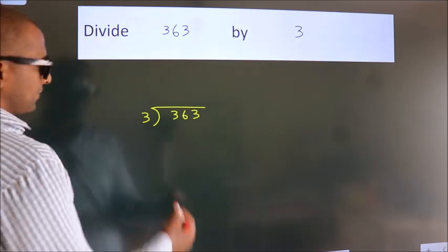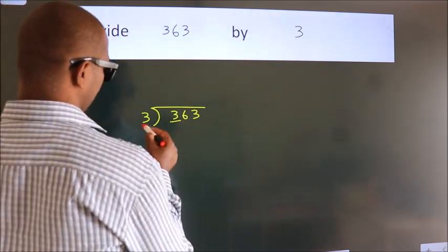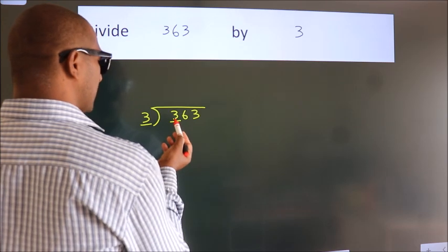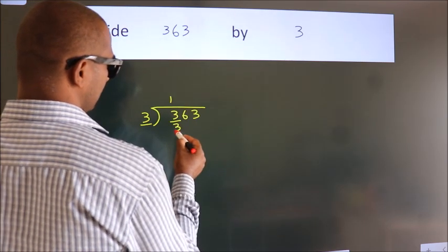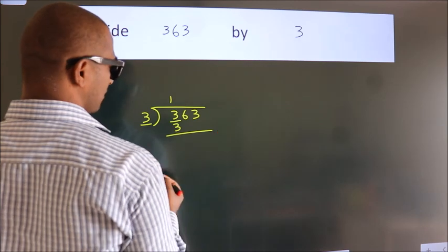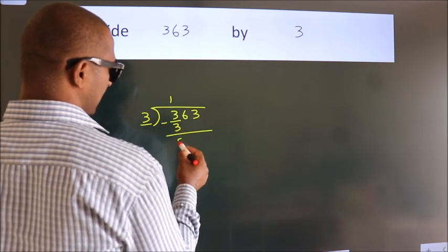Next, here we have 3. Here 3. When do we get 3 in the 3 table? 3 ones is 3. Now we subtract. We get 0.